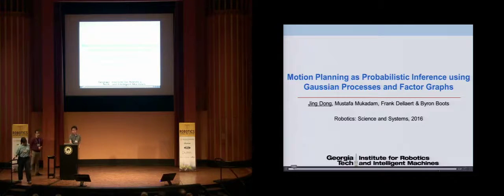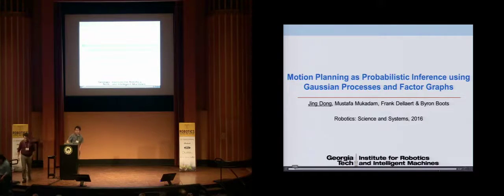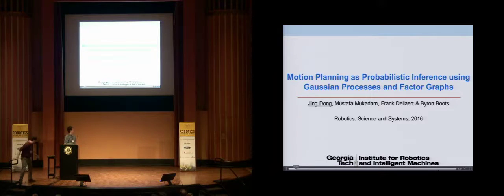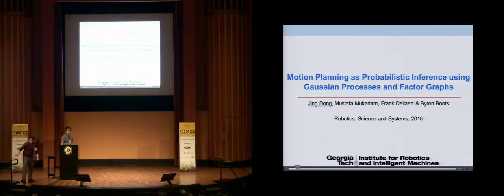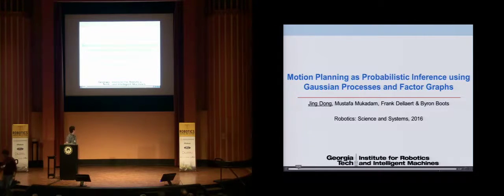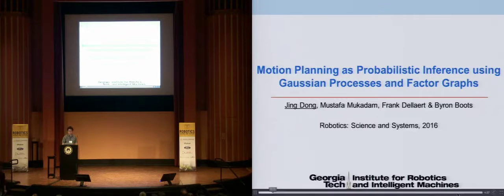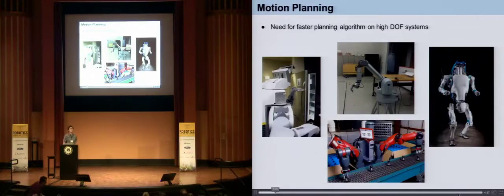Hi everyone, my name is Xin. Here I present a work: motion planning as probabilistic inference using Gaussian processes and factor graph. This work has been done in collaboration with Mustafa Muktan, Professor Frank Dellert, and Professor Byron Boots at IREM of Georgia Tech.